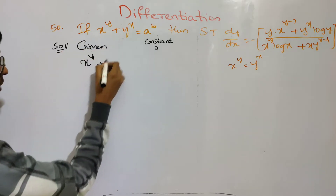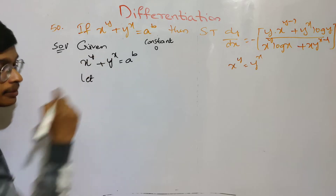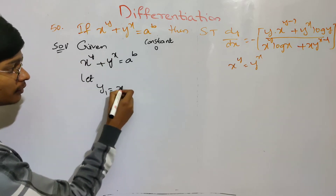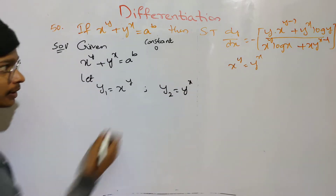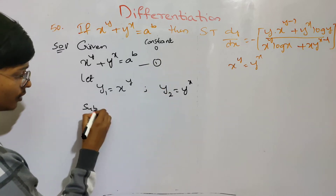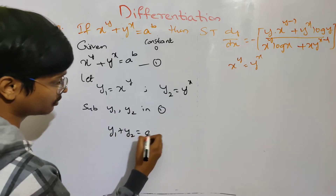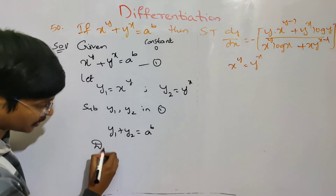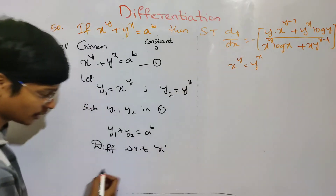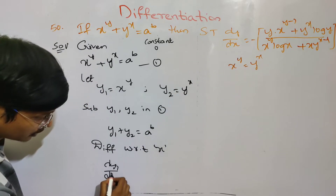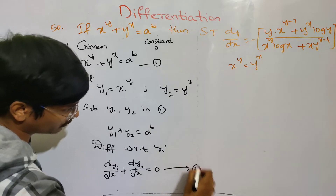Given x power y plus y power x equals to a power b. We have to use function power function. Let y1 equals to x power y, and y2 equals to y power x. Substituting y1 and y2, we get y1 plus y2 equals to a power b. Differentiating, dy1 by dx plus dy2 by dx equals to 0.